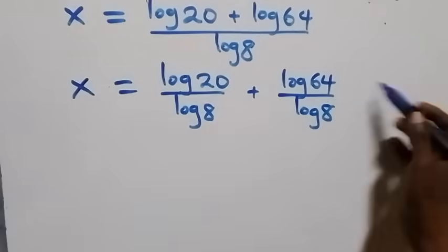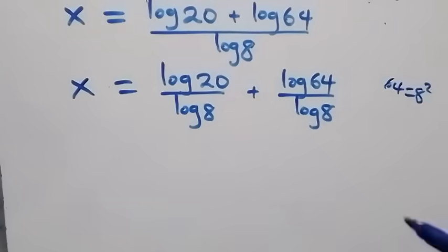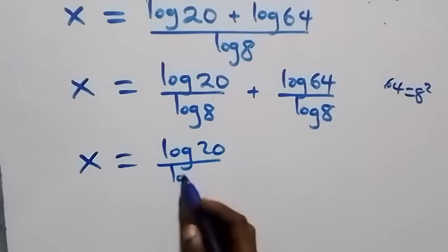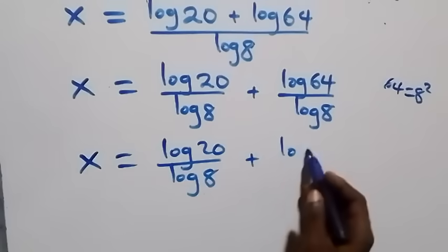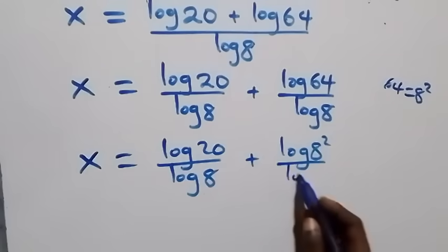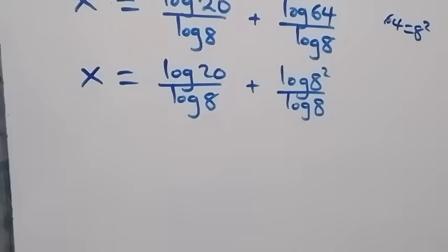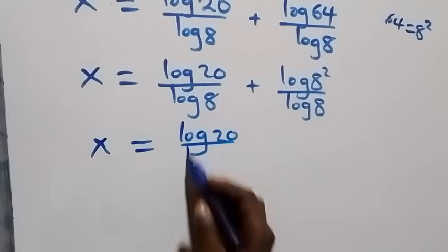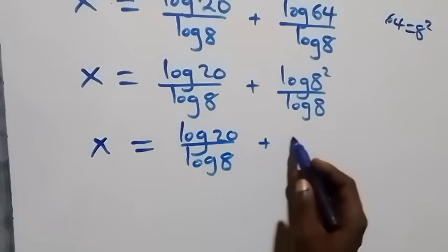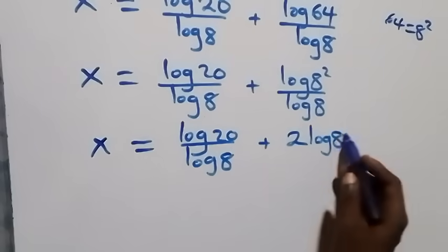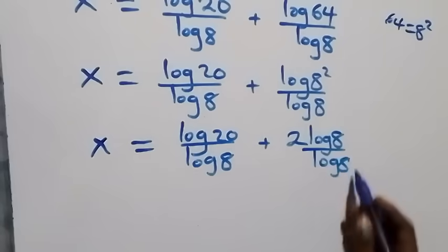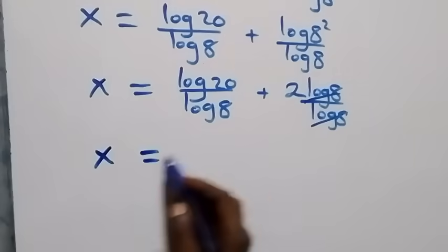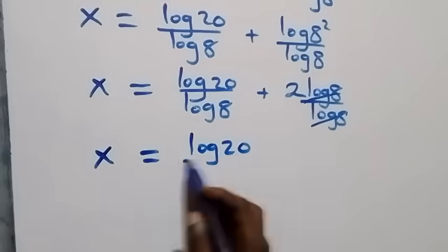Next step, let's rewrite 64 as 8 times 8, which is 8 squared. So we have x equals log 20 over log 8 plus log 8 squared over log 8. Applying the power law of logarithms, this becomes x equals log 20 over log 8 plus 2 log 8 over log 8. Log 8 cancels, leaving 2, so x equals log 20 over log 8 plus 2.